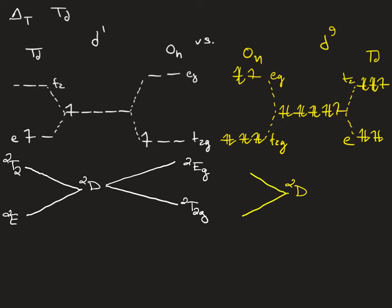But now we get a reversing of the states relative to the D1, where the doublet EG term is lower in energy than the doublet T2G term.